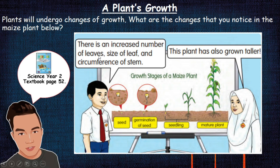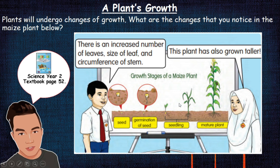What can we see here? There is an increased number of leaves, size of leaves, and circumference of stem. I will explain to you one by one. Increase in number of leaves — you can see from the seedling the number of leaves becomes more and more as the plant grows. There are only two leaves at first, then it grows more and more. And the size of the leaf also increases — it starts as a small leaf and then the size increases.